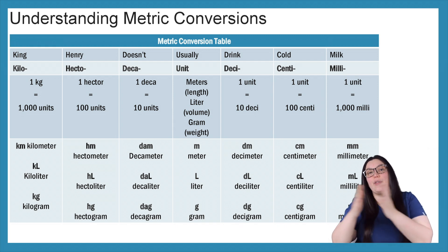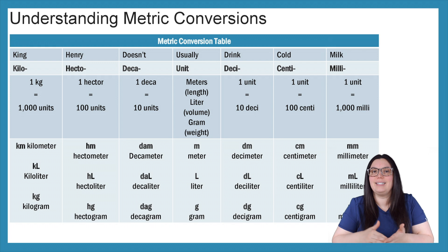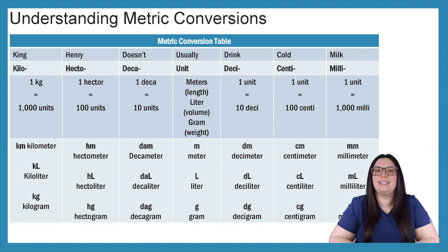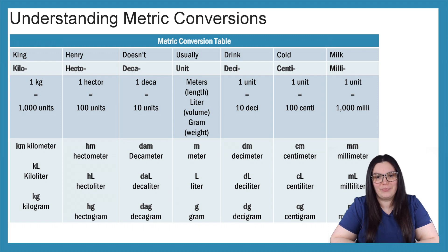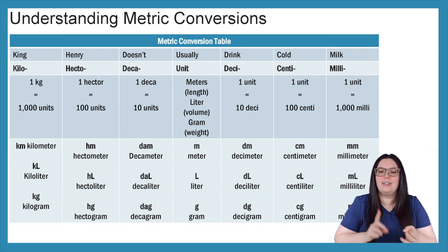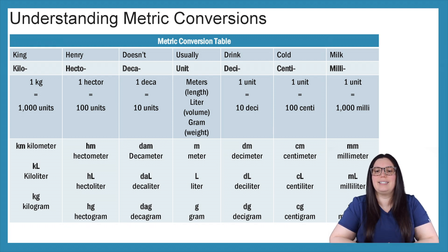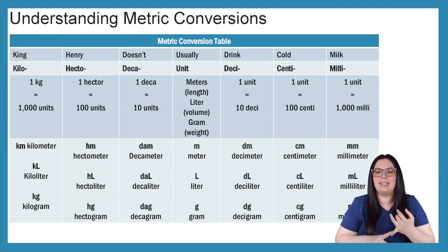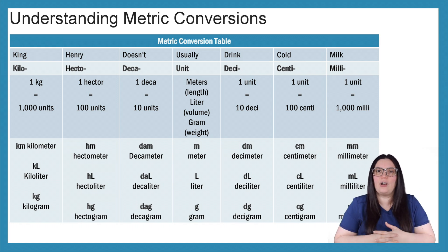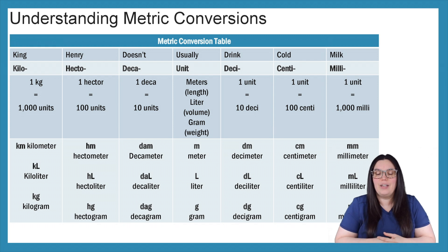Moving on to the other side of our units — that's going to be our Deci, Centi, and Milli. When it comes to Deci, one unit is equal to 10 deci, so we've got decimeter, deciliter, and decigram. Moving on to Centi, one unit is equal to 100 centi, so we've got centimeter, centiliter, and centigram. And lastly, we've got our Milli — one unit is equal to 1,000 milli, so we've got millimeter, milliliter, and milligram.